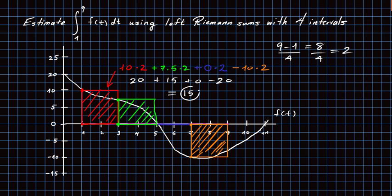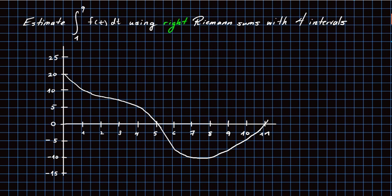So 15 is our estimate of the definite integral using left-hand sums with four subintervals. Now let's do the right-hand sums to estimate the same integral from 1 to 9. The subintervals are the same: 1 to 3, 3 to 5, 5 to 7, and 7 to 9. But this time I use right-hand endpoints. For the first rectangle, I use t = 3, where the value is 7.5, giving a slightly smaller rectangle: 7.5 times 2.